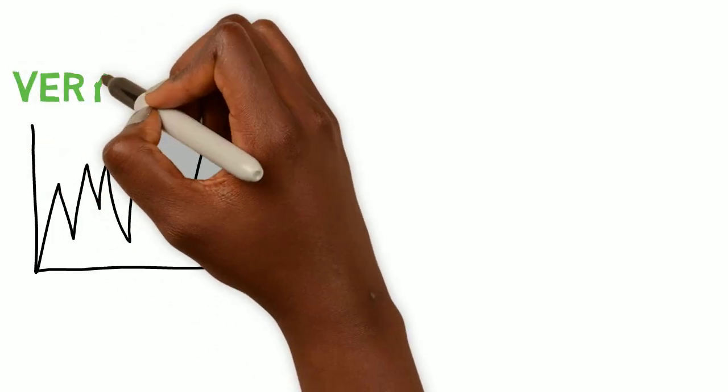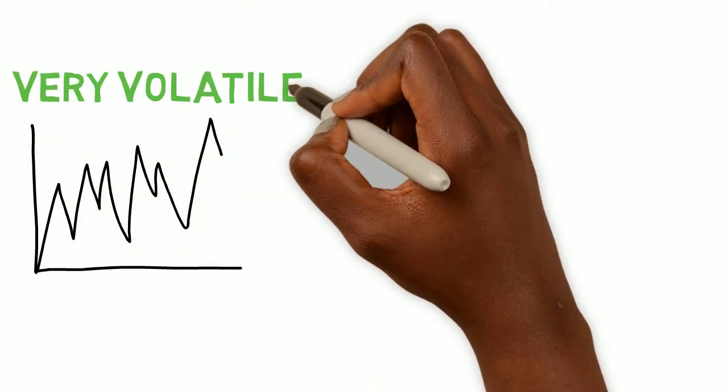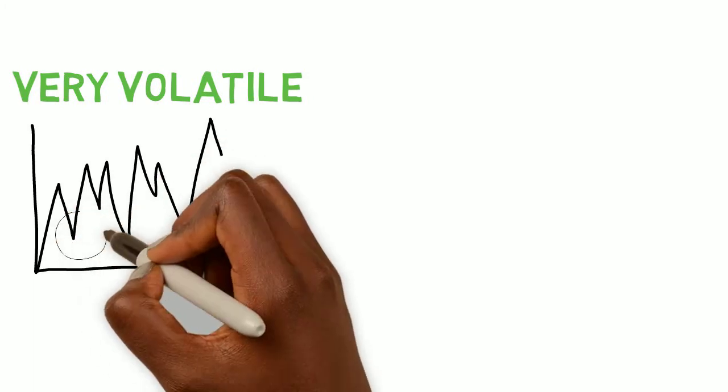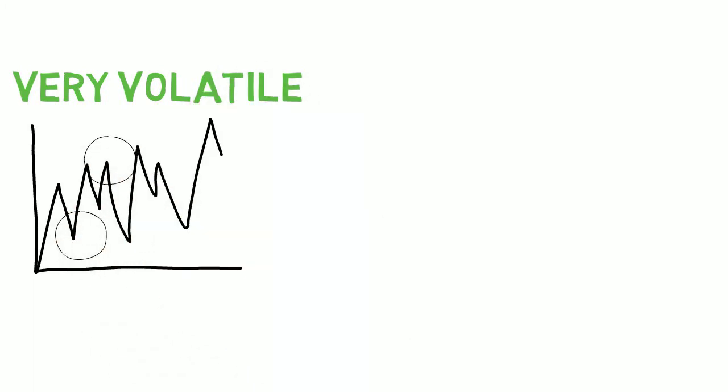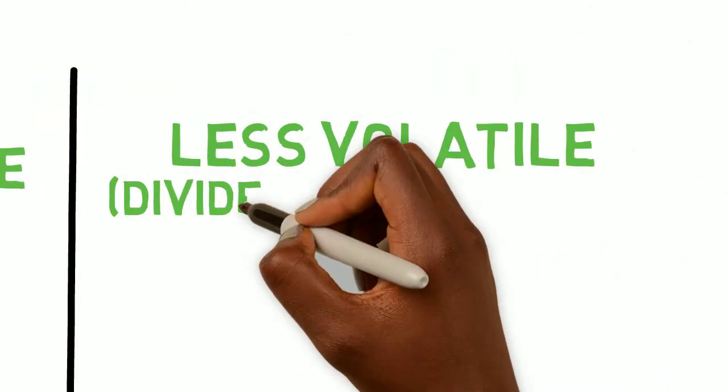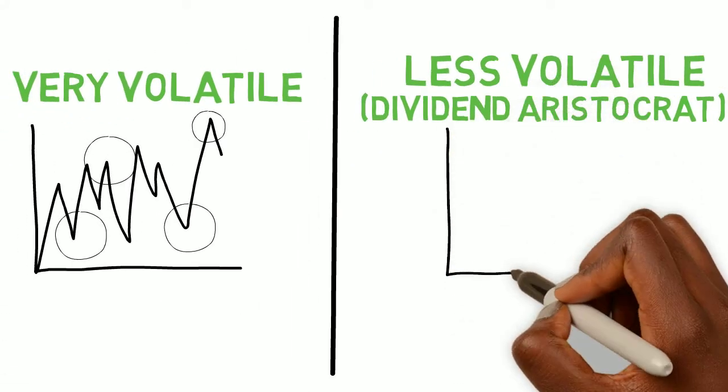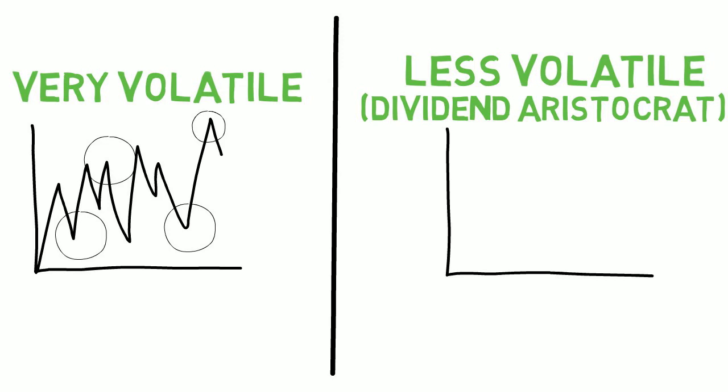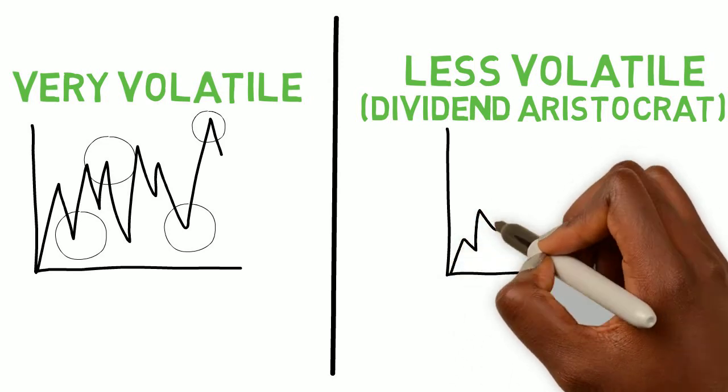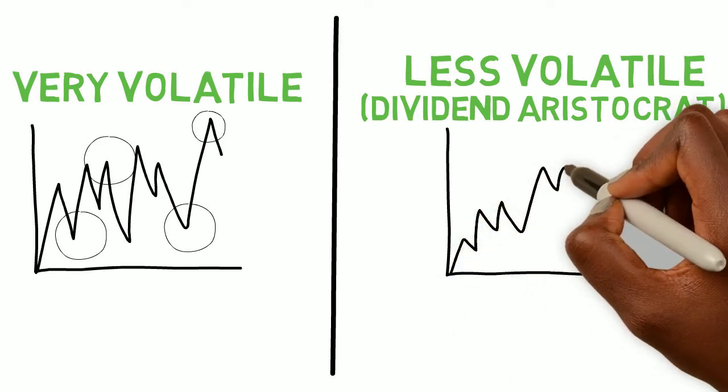And for those who don't know what volatility in the stock market is, check this example out. Here's a really volatile stock, and you see up and down, up and down, very unstable. And here is a less volatile stock, which is what I expect from my well established companies during a bear market.